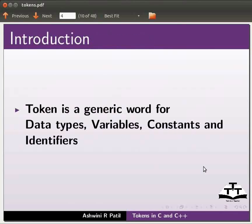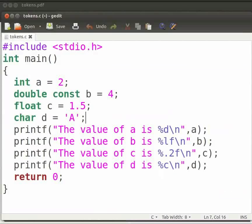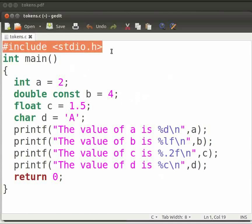Let us start with our program. I have already typed the code on the editor. Let me open it. Note that our file name is tokens.c. In this program we will initialize the variables and print their values. Let me explain the code now. This is our header file.